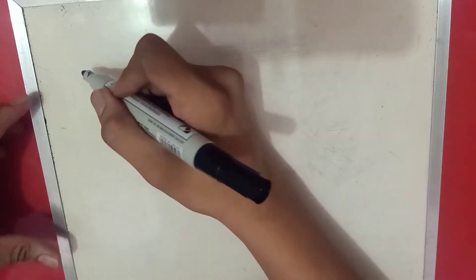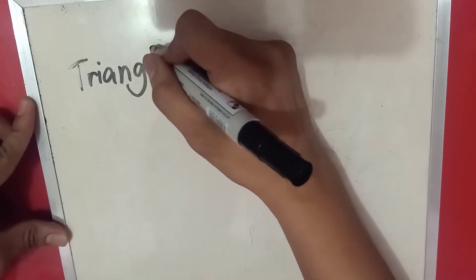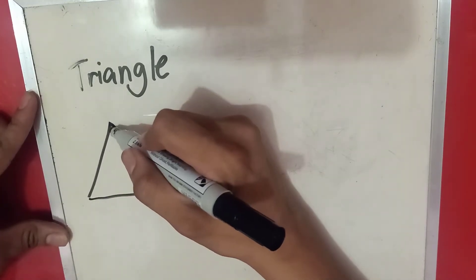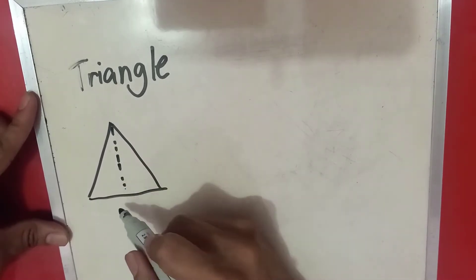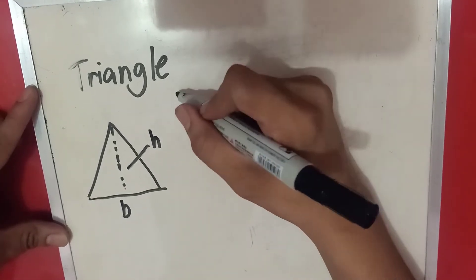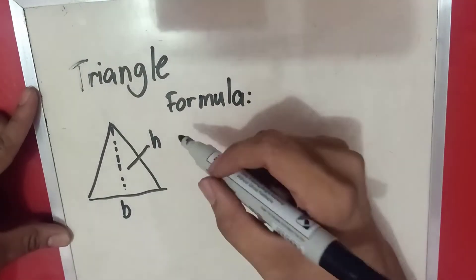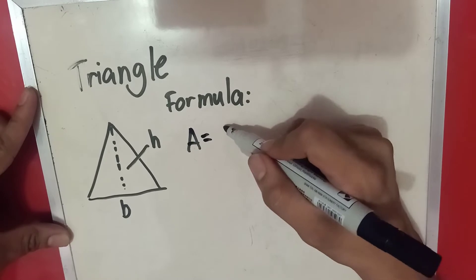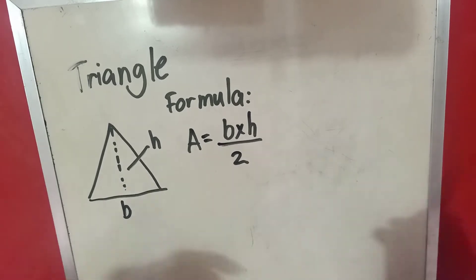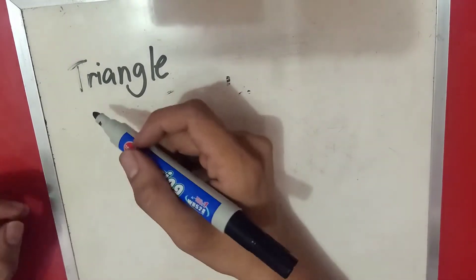Let's proceed now to the first geometric figure, which is a triangle. A triangle has a base and it also has a height. The formula that we're going to use to find the area of a triangle is: area is equal to base times height over 2.